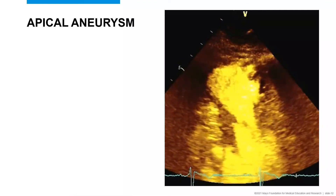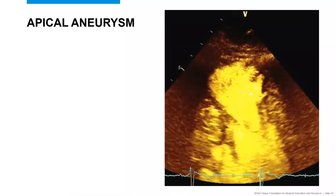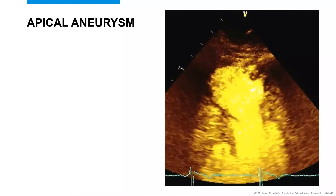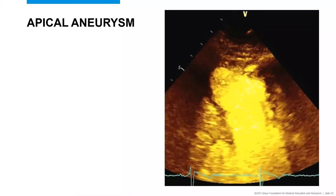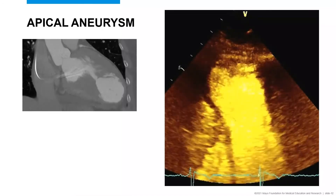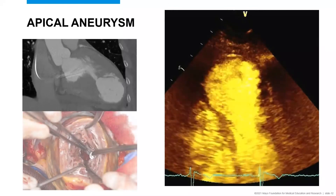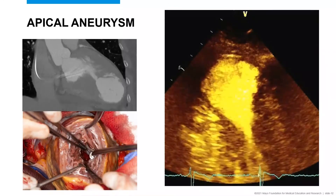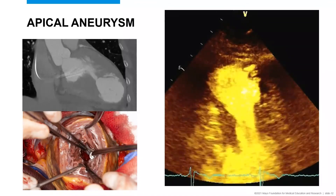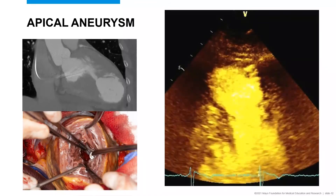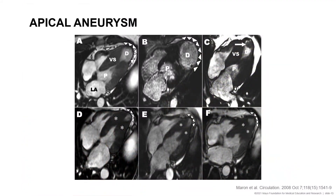Here's an example of an apical aneurysm on a contrast transthoracic echocardiogram — a two-chamber view zoomed in on the LV apex showing a large aneurysm with dyskinetic walls. A comparable image on cardiac CT also shows a large apical aneurysm with thin walls; this patient went to surgical apical aneurysmectomy. The surgeons opened up the LV apex, peering into the LV cavity, and sutured it shut. A panel from a classic 2008 paper by Dr. Barry Maron in Circulation shows all the different shapes and sizes that LV apical aneurysms can take on.